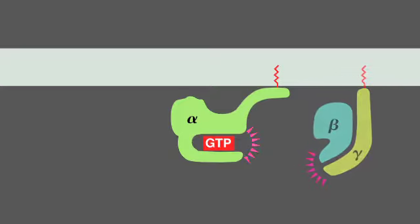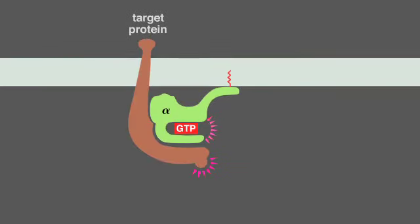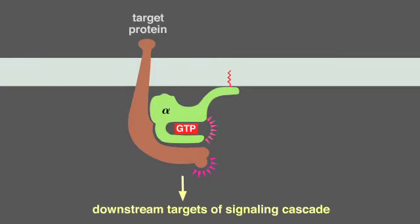Both of the activated components can now regulate the activity of target proteins in the plasma membrane, as shown here for a GTP-bound alpha subunit. The activated target proteins then relay the signal to other components in the signaling cascade.